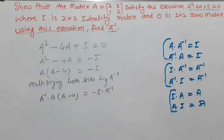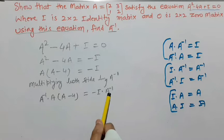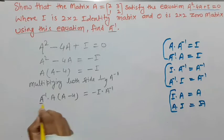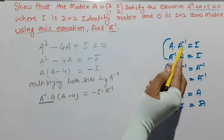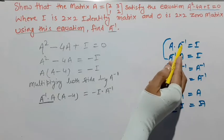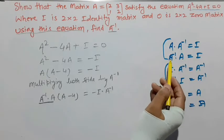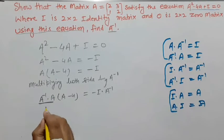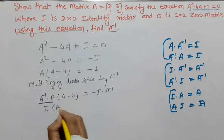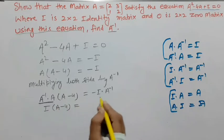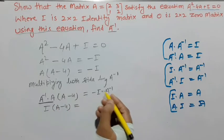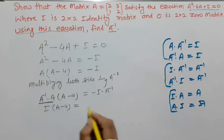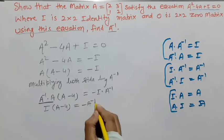यह हो जाएगा: A⁻¹ × A × (A - 4) = -I × A⁻¹। A⁻¹ × A = I होता है, तो left side बन जाएगा I(A - 4)। Right side पर I × A⁻¹ = A⁻¹, तो यह हो गया -A⁻¹।